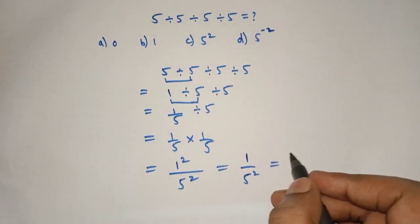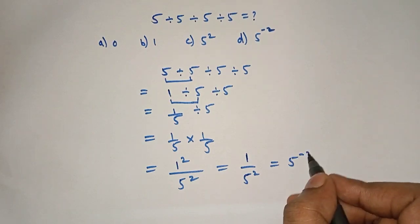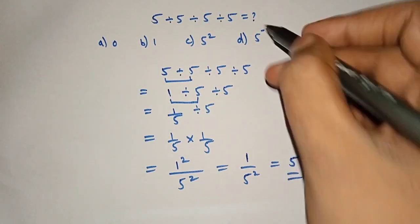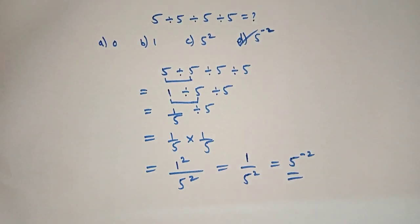which can be written as 5 raised to minus 2, which is our right answer. Option D is our right answer. If you like my video, subscribe to my channel. Thank you.